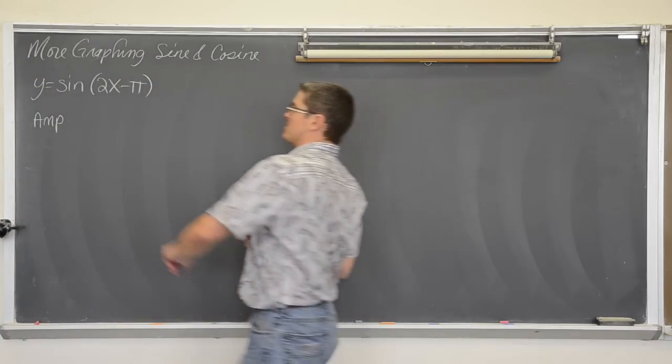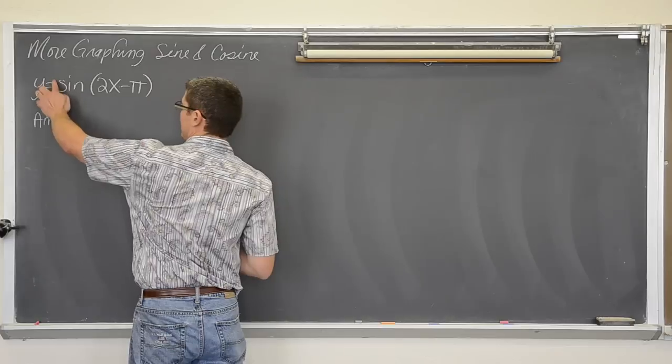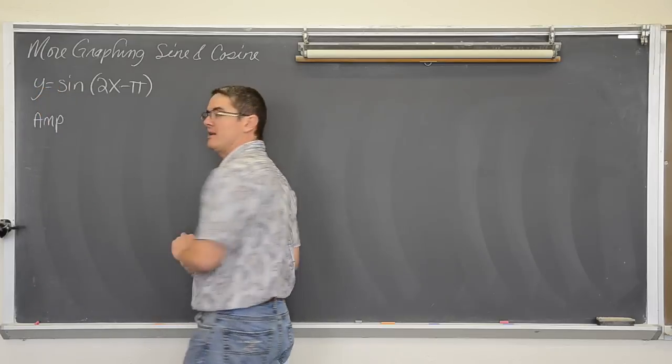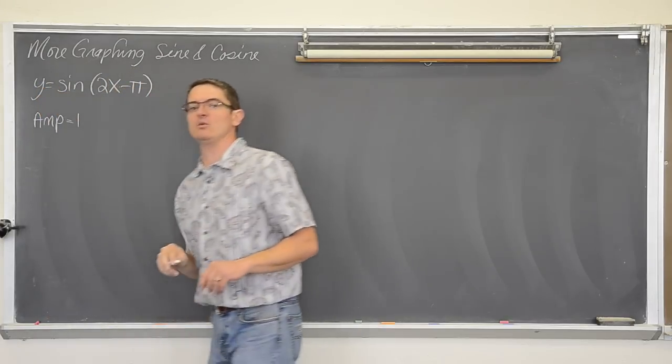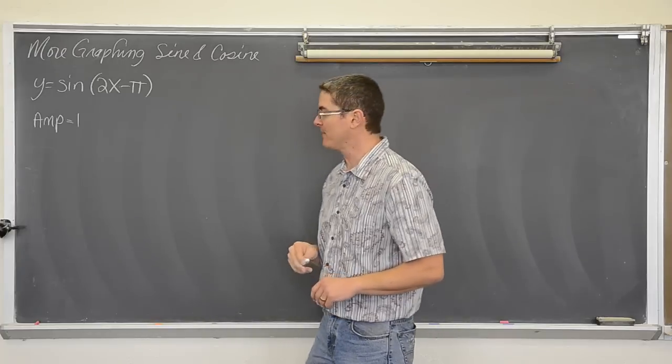The amplitude is set by a in the beginning of your equation. The a value is negative one, so the amplitude is equal to one. It is the absolute value of a.